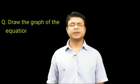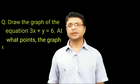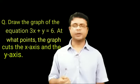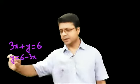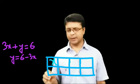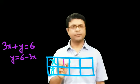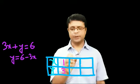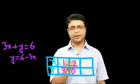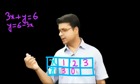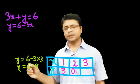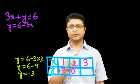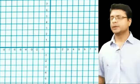Let us take one more example: draw the graph of 3x + y = 6 and find where it intersects the x-axis and y-axis. Rearranging: y = 6 − 3x. If x = 1, y = 3. If x = 2, y = 0. If x = 3, y = 6 − 9 = −3.